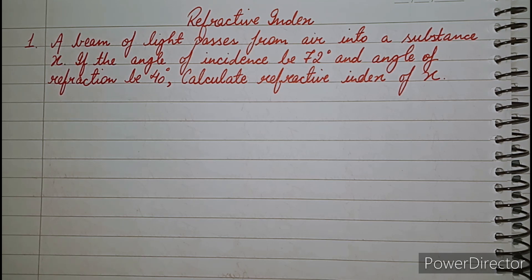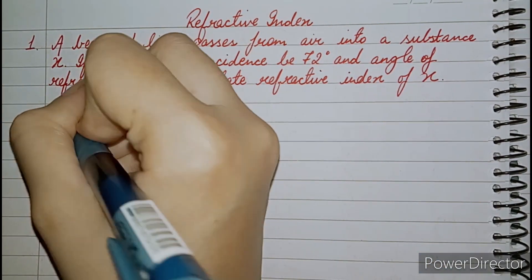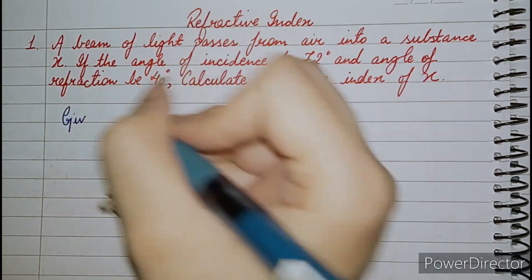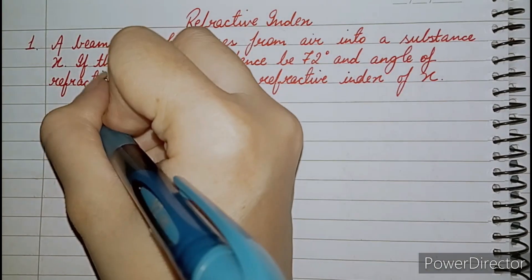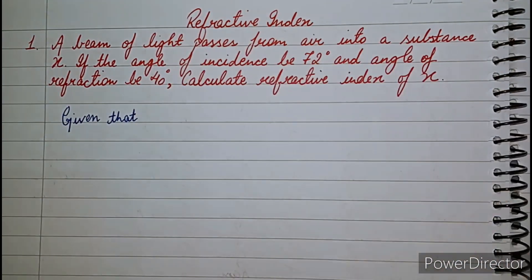A beam of light passes from air into a substance X. If the angle of incidence is 72 degrees and the angle of refraction is 40 degrees, what will be the refractive index? We need to calculate the refractive index. I am telling you the exact method of how you need to present the questions in your exam.